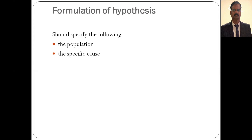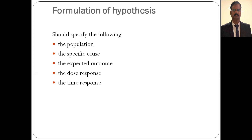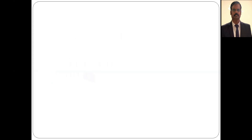For formulating a hypothesis, five important things are needed: the population, the exposure (cause), the outcome, the dose response, and the time response. For example, 'smoking causes lung cancer' only includes exposure and outcome. A well-formulated hypothesis would be: 'Smoking more than 10 cigarettes per day for more than 10 years among males over 40 years old will develop lung cancer' — this includes population, dose response, time response, cause, and outcome.